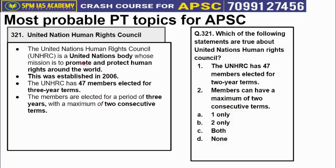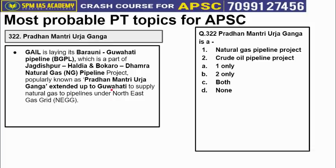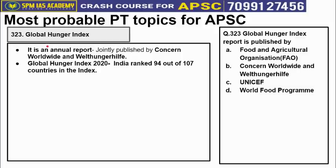Topic 322 is about Pradhan Mantri Urja Ganga. GAIL is laying the Barauni-Guwahati Pipeline, which is part of the Jagdishpur-Haldia-Bokaro-Dhamra Natural Gas Pipeline, popularly known as Pradhan Mantri Urja Ganga Pipeline. Topic 323 is about the Global Hunger Index — an annual report jointly published by Concern Worldwide and Welthungerhilfe. India's rank in Global Hunger Index 2020 was 94 out of 107 countries. Please attempt the questions based on topics 322 and 323.